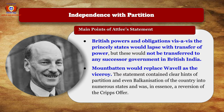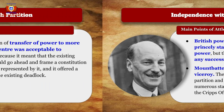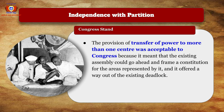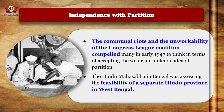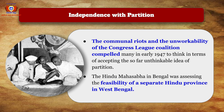The statement contained clear hints of partition and even the balkanization of the country into numerous states, and was in essence a reversion of the Cripps offer. The Congress found the provision of transfer of power to more than one centre acceptable, as it meant the existing assembly could frame a constitution for areas represented by it. Communal riots and the unworkability of the Congress-League coalition compelled many in early 1947 to accept the hitherto unthinkable idea of partition.